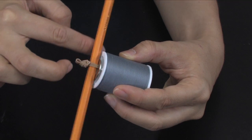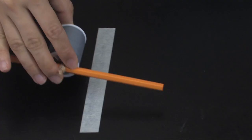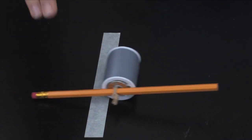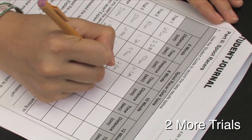Students should switch jobs, then wind the racer eight times, release the racer, and collect the data. They will repeat this for two more trials.